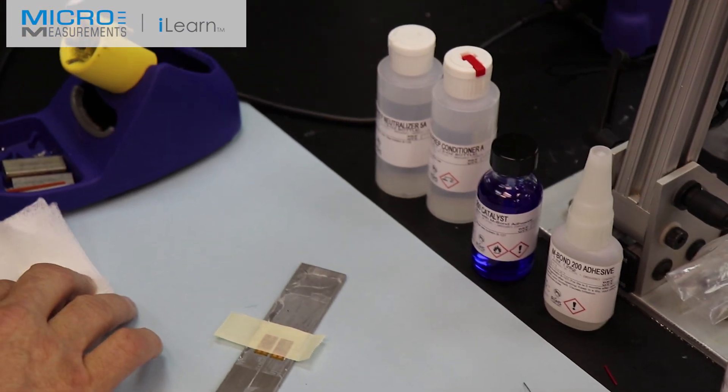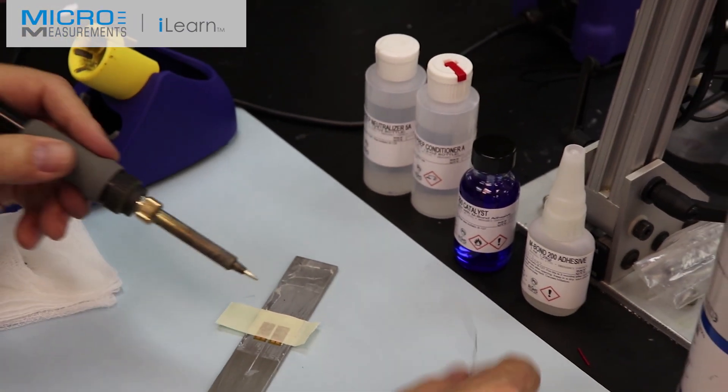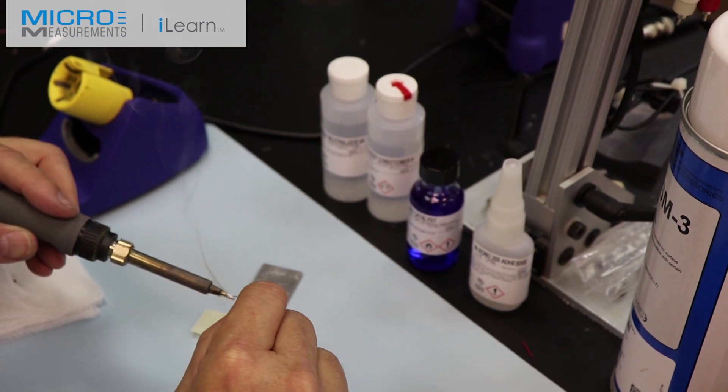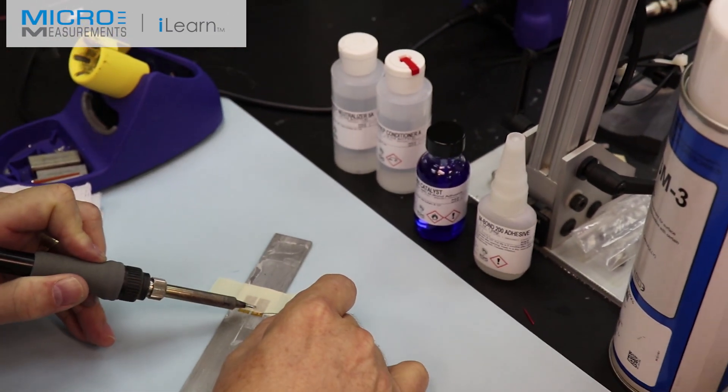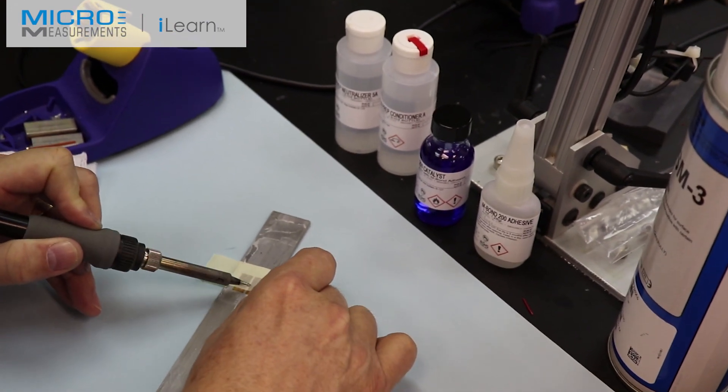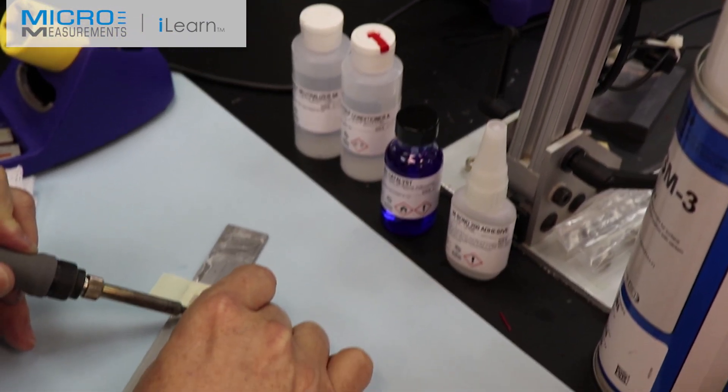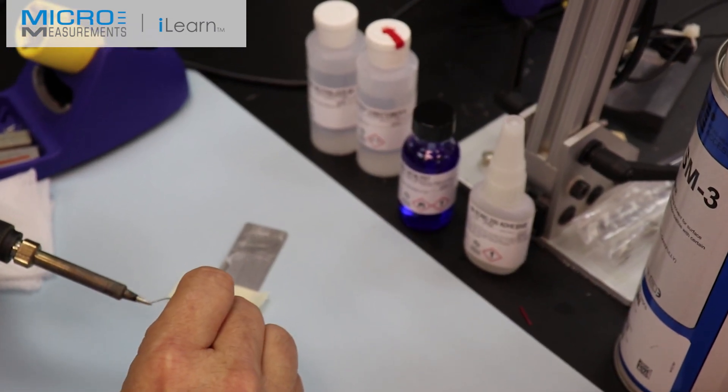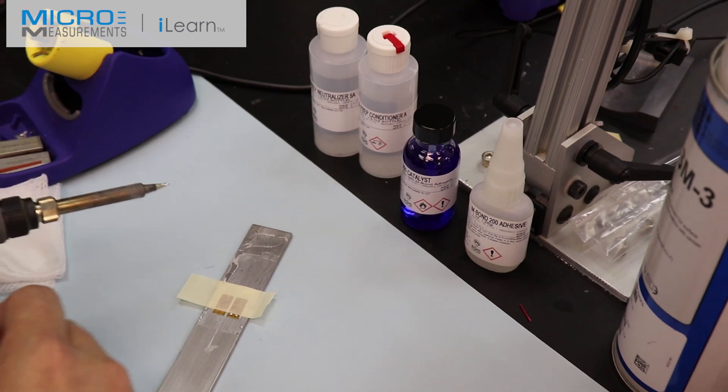Now, once you've got the tape in place, you're ready to go ahead and tin the tabs of the gauge. I'll just clean the soldering tip off. Feed a fresh pool of solder on it.